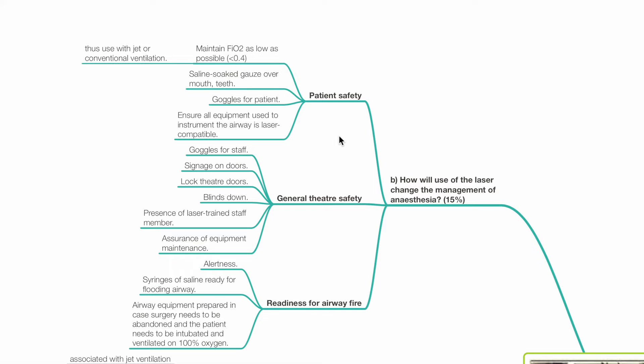Patient safety: Maintain FiO2 as low as possible, for example less than 0.4, used with jet or conventional ventilation. Use saline-soaked gauze over mouth and teeth. Provide goggles for the patient. Ensure all equipment used to instrument the airway is laser compatible.